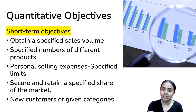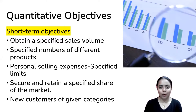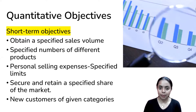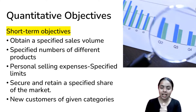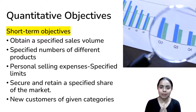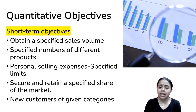The next category is quantitative objectives, which are short-term objectives compared to long-term qualitative objectives. First is sales volume — managing different products and sales value to cover expenses. This includes the value of demand and payment. Market share is another quantitative objective, covering different categories of customers in a short time.